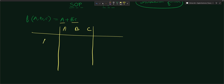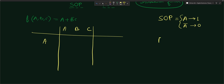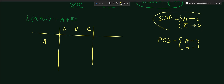Now we will write down each term. In a Sum of Product expression: when we write a variable without complement it means value one, and when we write a complement it means value zero. For a Product of Sum expression it is the opposite: a variable without complement means zero, and a complement means one. These are the two conditions you have to memorize.